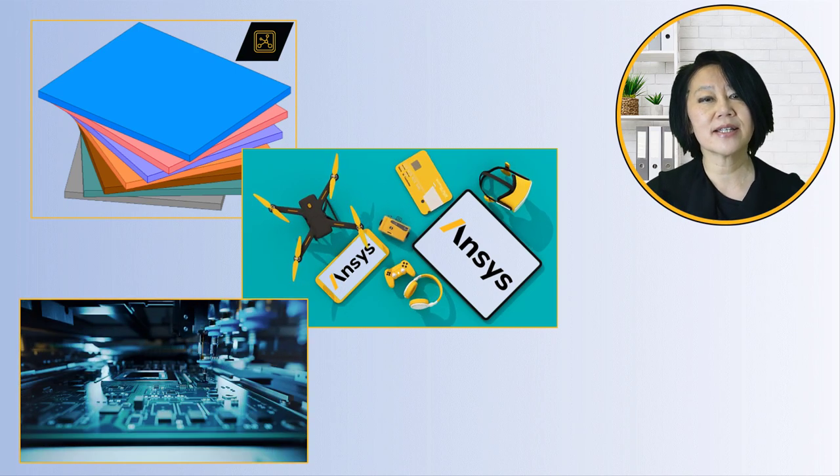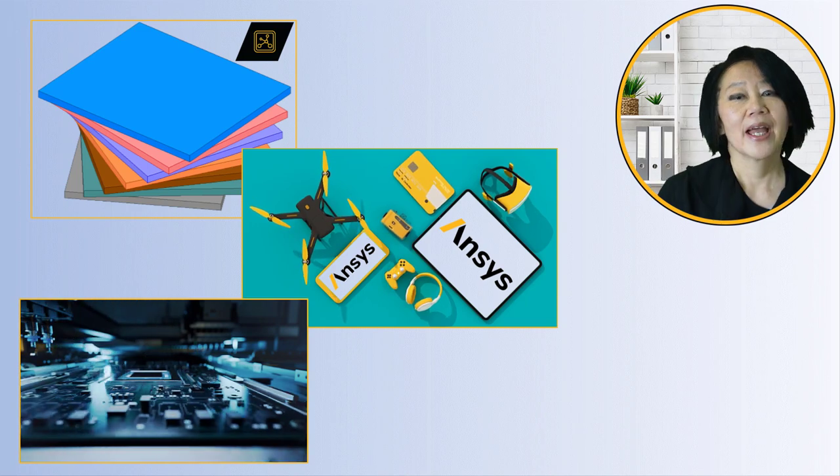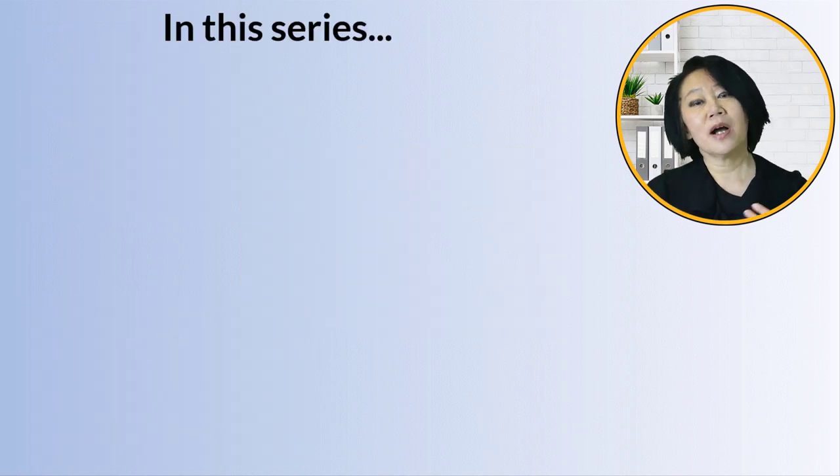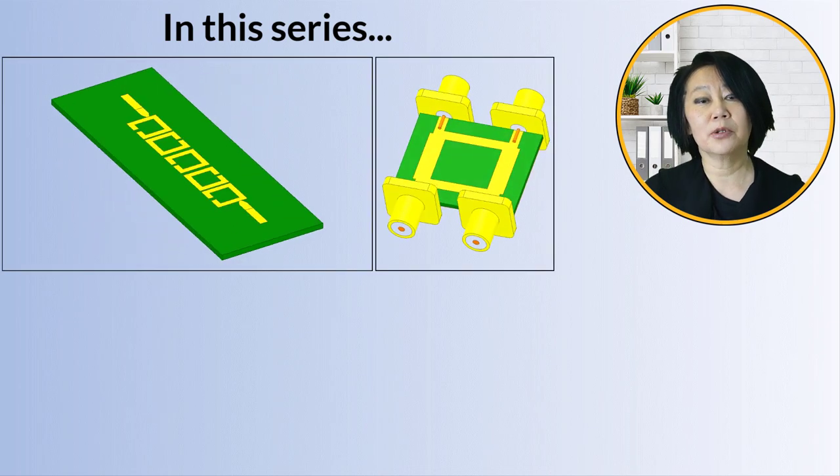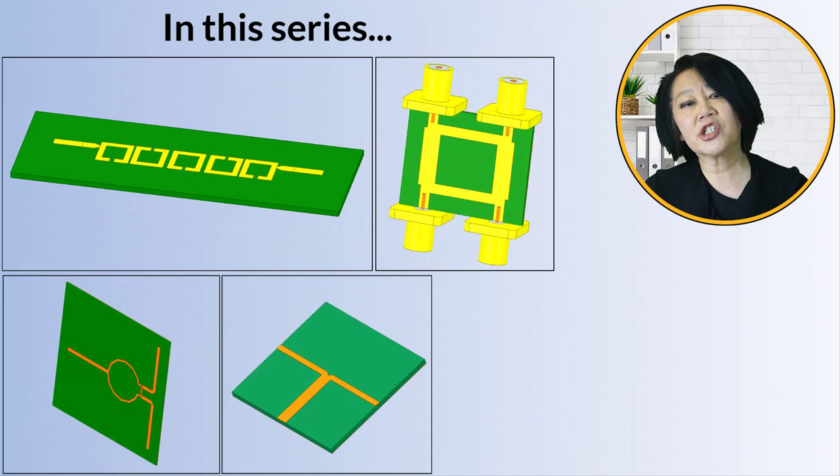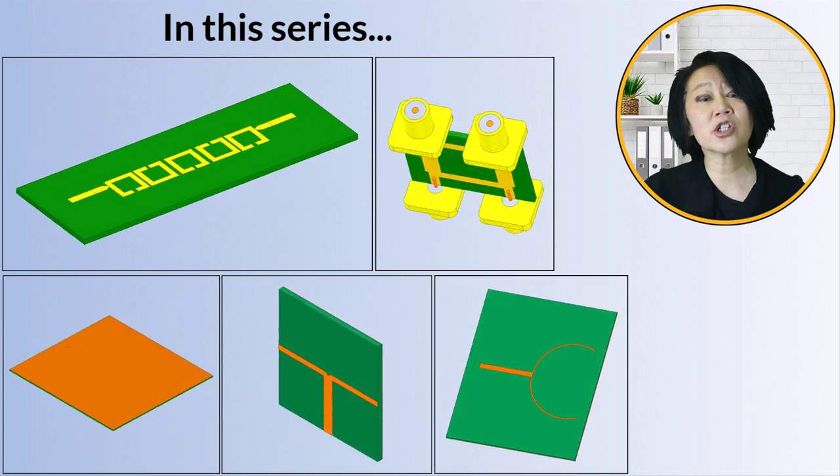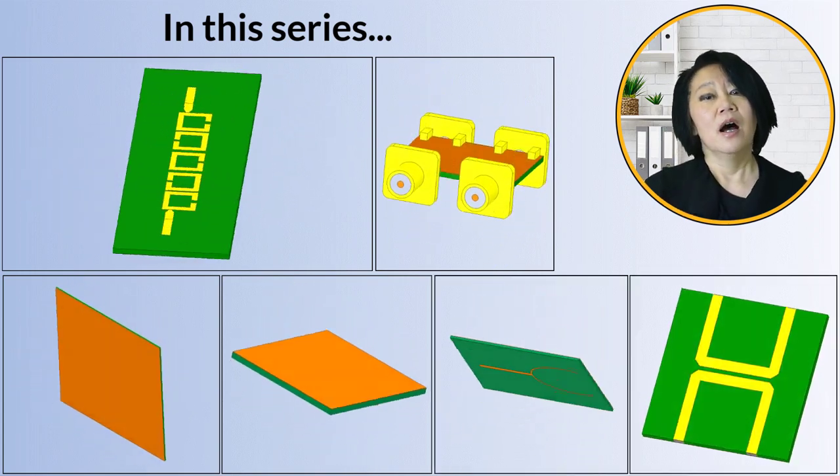In this series of modules, we'll use some common passive components, specifically a microstrip filter, a branch line coupler, a Wilkinson, a T-junction, and maybe a curved junction as module examples. Of course, we're not limited to just these examples, but they're popular components used in reference microwave engineering textbooks.